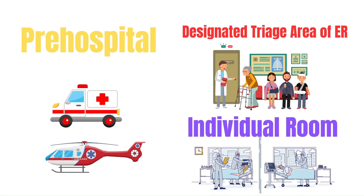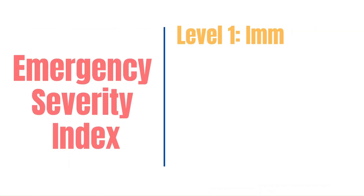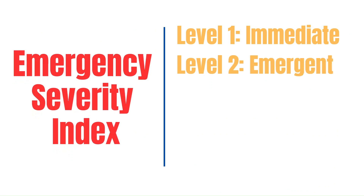Triage occurs in the pre-hospital setting and in the ER. In the pre-hospital setting, EMS decides where and how to transfer patients based on their needs. In the ER, triage can occur in the designated triage area, where patients are seen after they walk in, or in each individual room after they're brought in by ambulance.